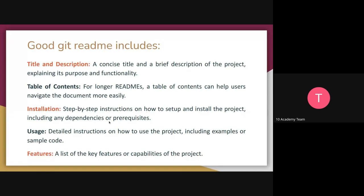For a good README, include a title and description about the project. If the README is long, provide a table of contents to guide the reader — this is advisable. Include step-by-step installation instructions: how to install dependencies and everything needed. Also include usage — detailed instructions on how to use the project, including examples or sample code. The more descriptive your README, the better for the reader.